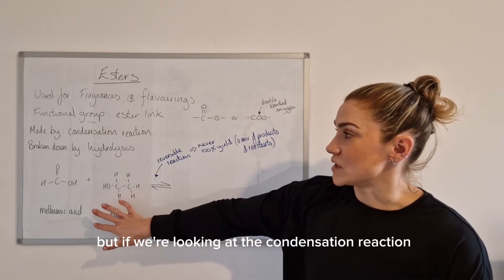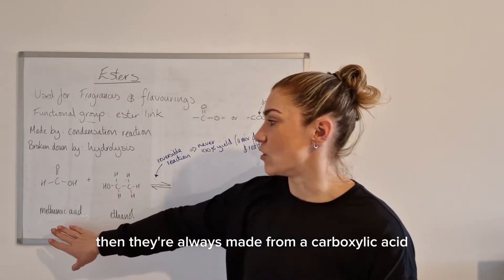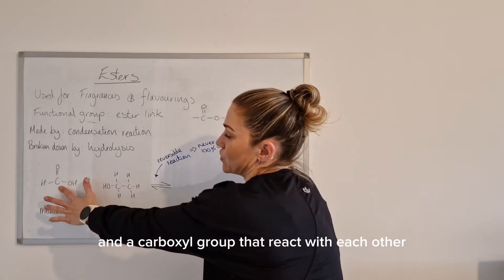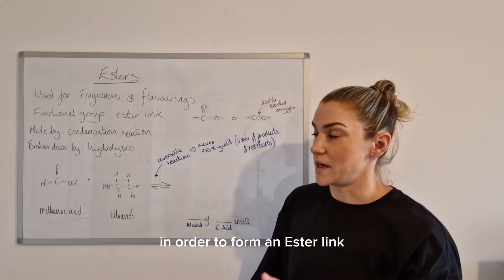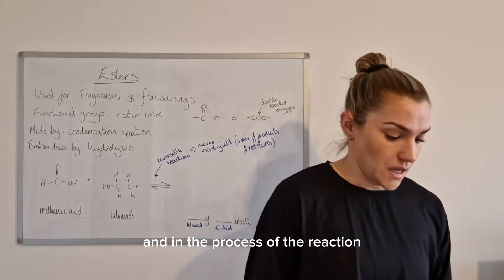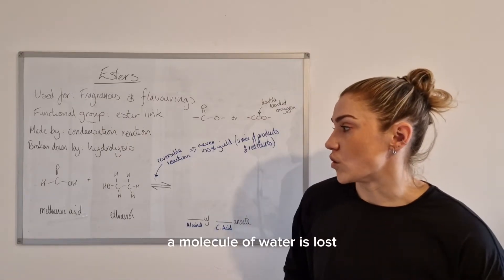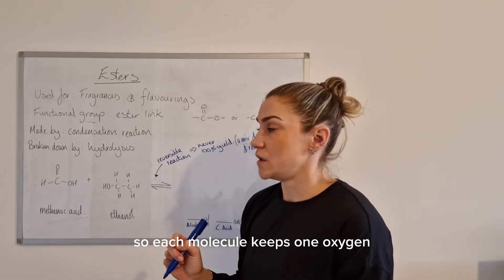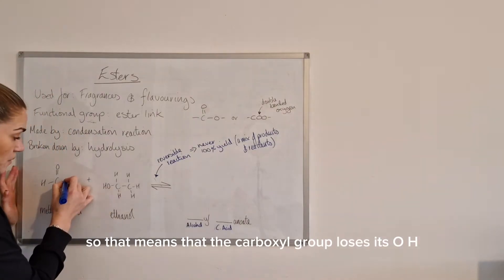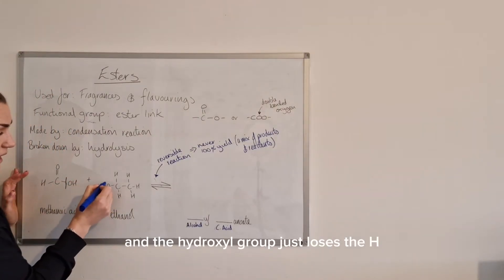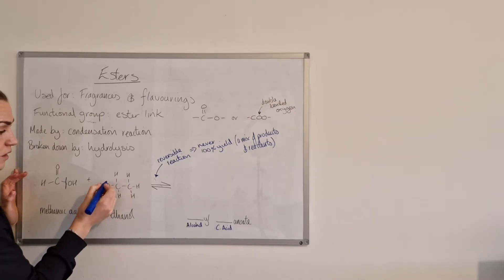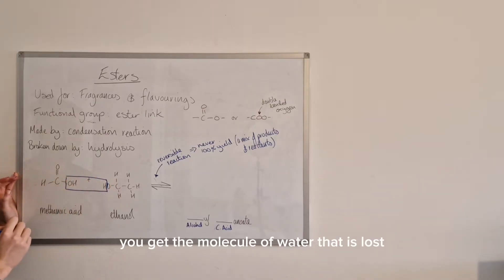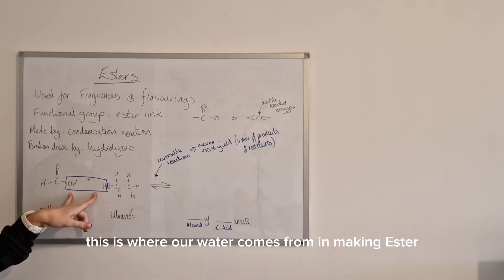Looking at the condensation reaction: esters are always made from a carboxylic acid and an alcohol. It's a hydroxyl group and a carboxyl group that react with each other to form an ester link, and in the process a molecule of water is lost. Each molecule keeps one oxygen — the carboxyl group loses its OH and the hydroxyl group just loses the H — and that's where your molecule of water comes from.